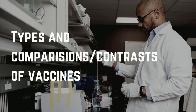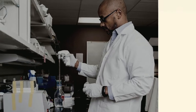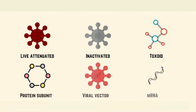There have been many types of vaccines developed over the years. Those are: live attenuated, inactivated, toxoid, subunit or conjugate, viral vector, and mRNA vaccine.